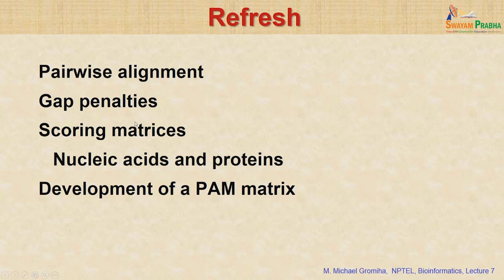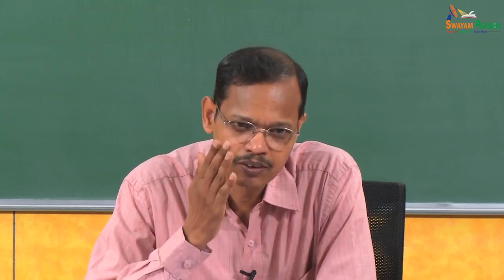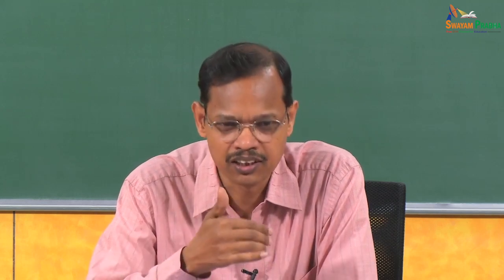We try to construct scoring matrices to align sequences. There are different matrices for nucleic acids as well as for proteins. For nucleic acids, there are four bases. Based on substitution, we assign either a reward or a penalty — either a mild penalty or a severe penalty. For example, purine-to-purine or pyrimidine-to-pyrimidine substitutions versus purine-to-pyrimidine, and we give the penalty accordingly, giving preference to matching similar sequences.